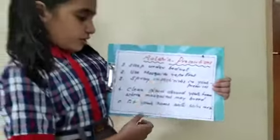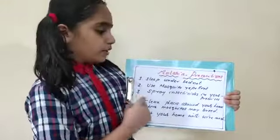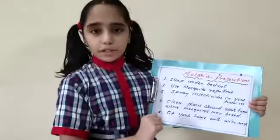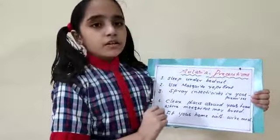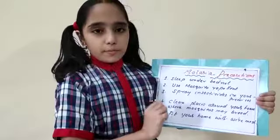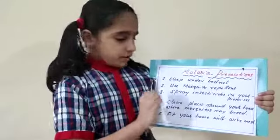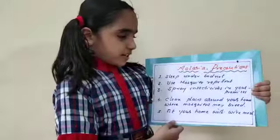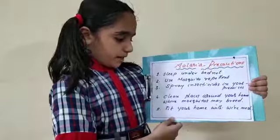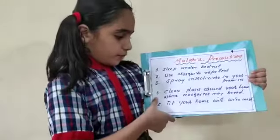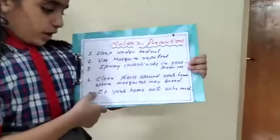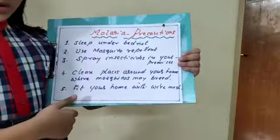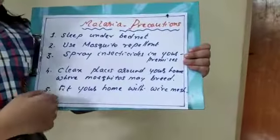Precautions. Number 1: sleep under a bed net. Number 2: use a mosquito repellent. Number 3: spray insecticides in your premises. Number 4: clean places around your house where mosquitoes can breed.